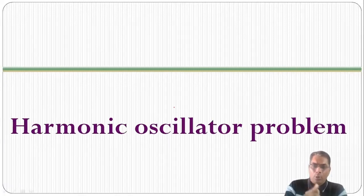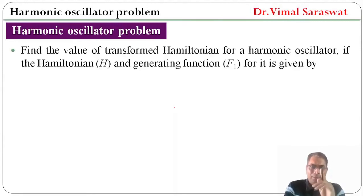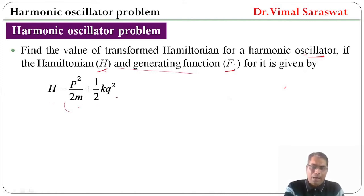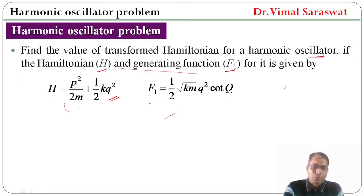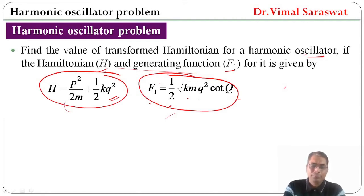Now, the harmonic oscillator problem. Find the value of the transformed Hamiltonian for a harmonic oscillator if the Hamiltonian H and generating function F1 are given by: H equals p²/(2m) plus (1/2)kq², and generating function F1 equals (1/2) times root(km) times q² times cot(Q). We have to find the transformed Hamiltonian for this problem.